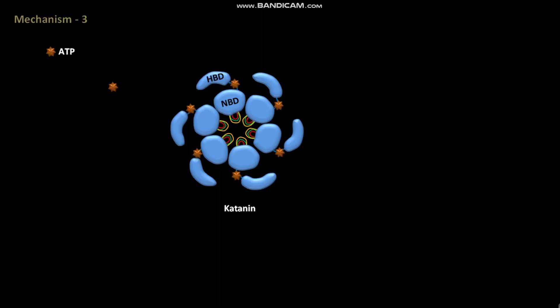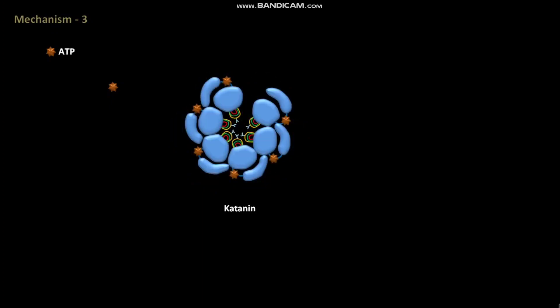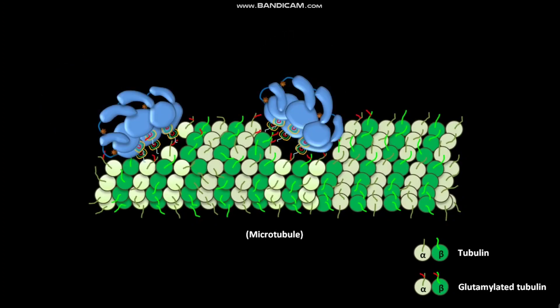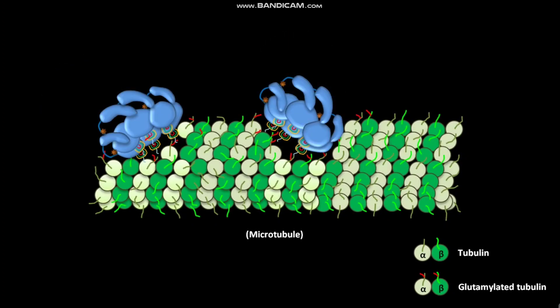The smaller subunits then cause ATP hydrolysis. Due to this ATP hydrolysis, the conformation of katanin changes. After this hydrolysis, the smaller subunits of katanin perform microtubule severing. The larger subunits of katanin direct katanin to the centrosome.